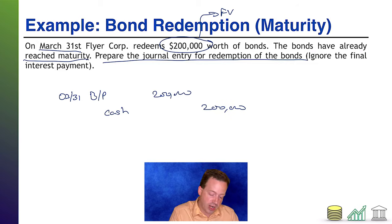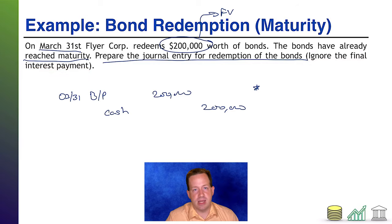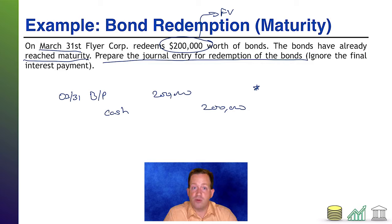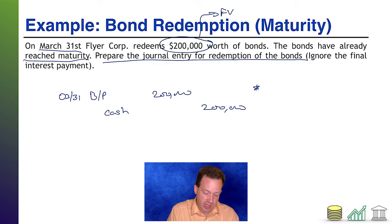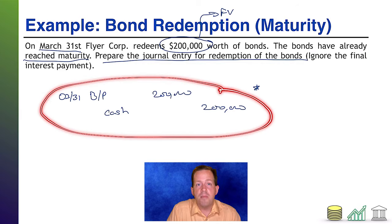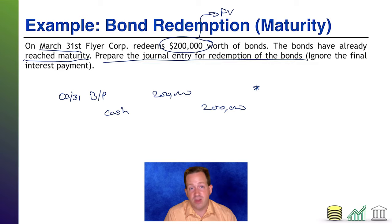I do have to put an asterisk on being done — note I'm ignoring the final interest payment, just for simplicity so we can focus on the redemption piece, not the interest piece. Going back to when I first told you about issuance, remember the final interest payment on a bond usually comes at the time of maturity. So normally you would also have an interest payment going with it, but we're ignoring that here so we can focus purely on redemption.